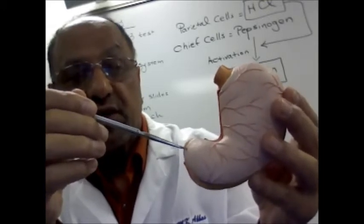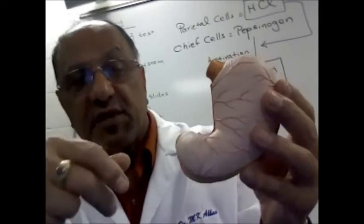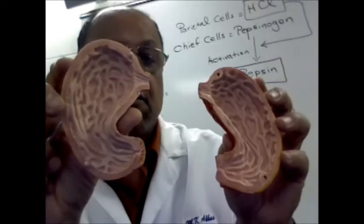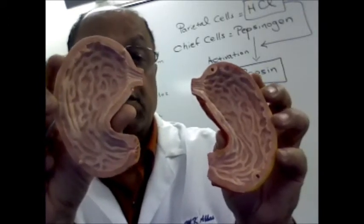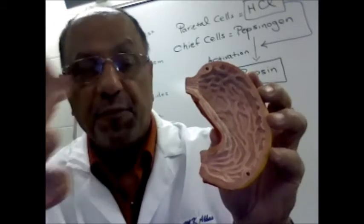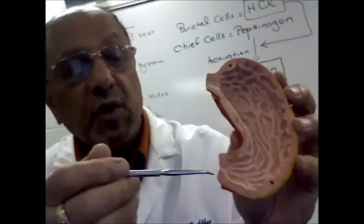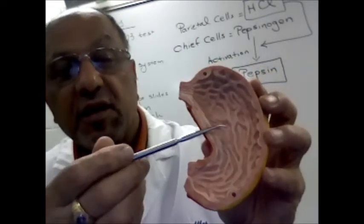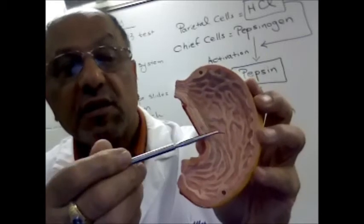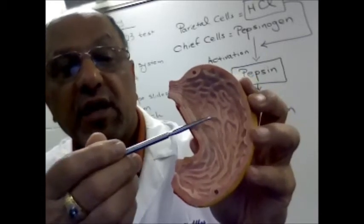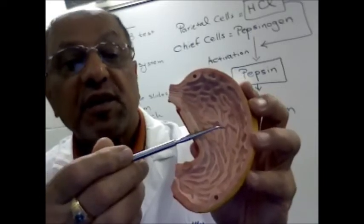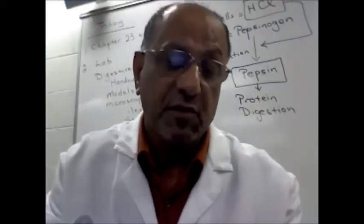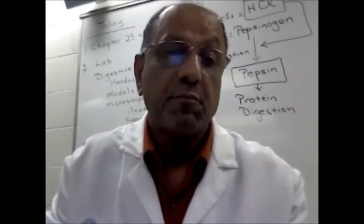The other sphincter is near where the stomach connects to the small intestine, and that is the pyloric sphincter. On this particular model we can open the stomach so we can see the inside. There are two things visible: we can see the pyloric sphincter, and we can see that the lining of the stomach is folded — those structures are known as rugae. That's the basic structure of the stomach.